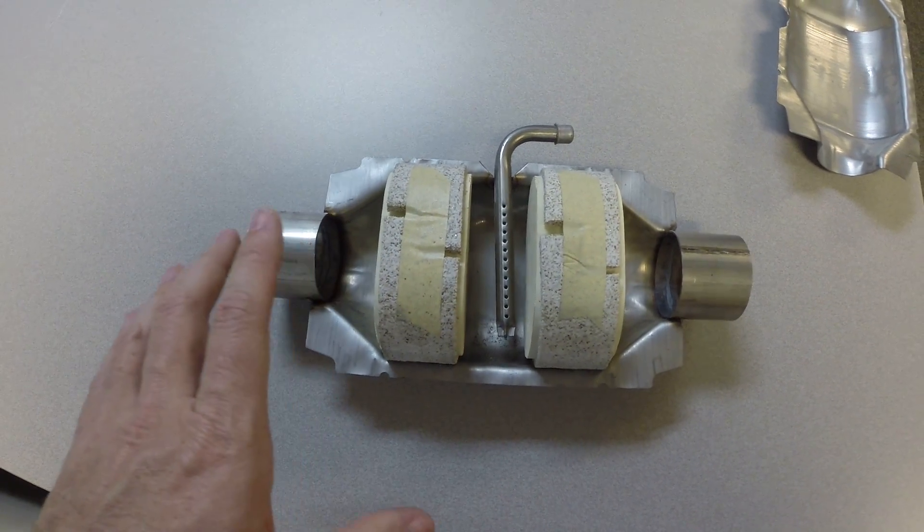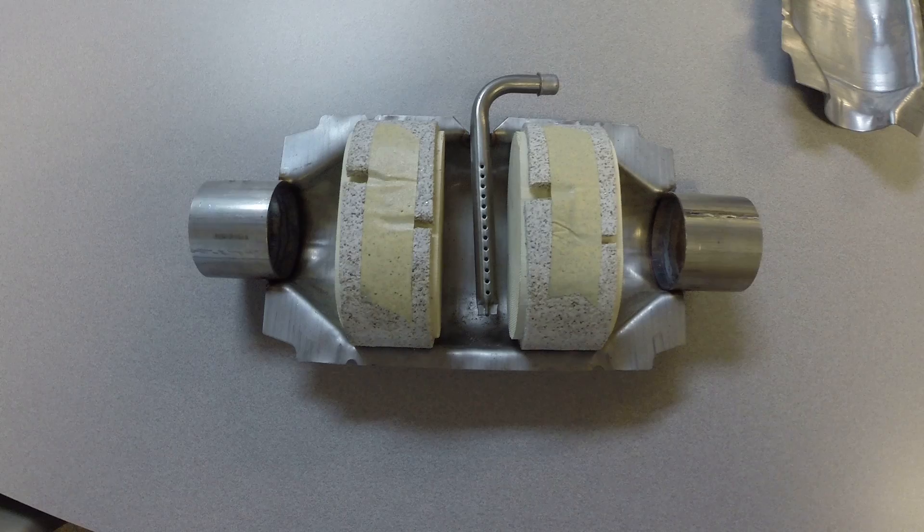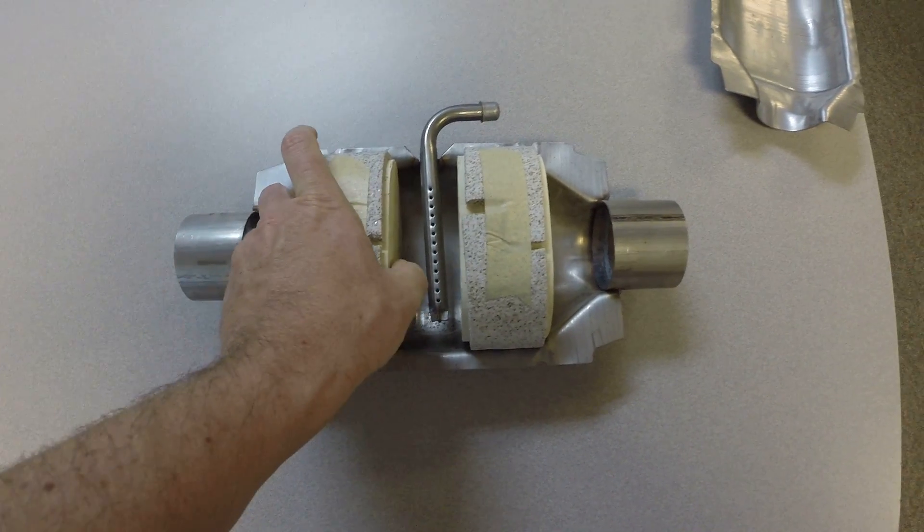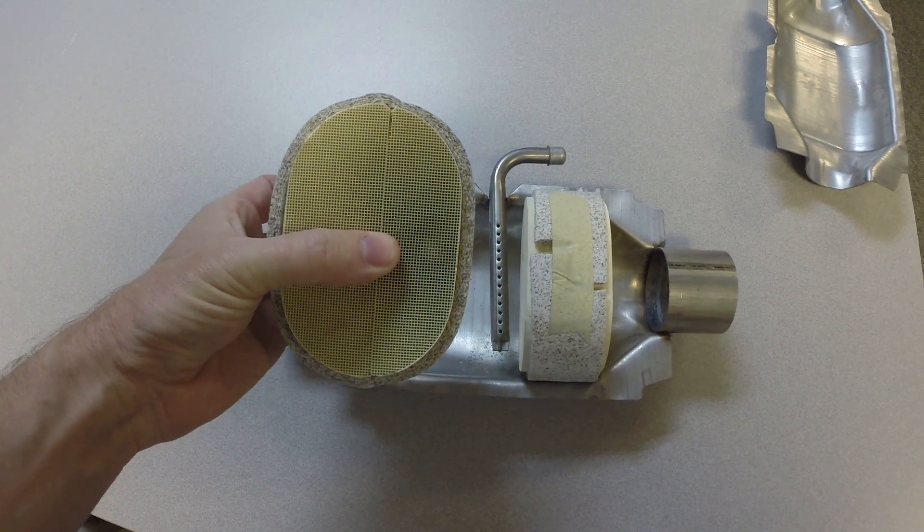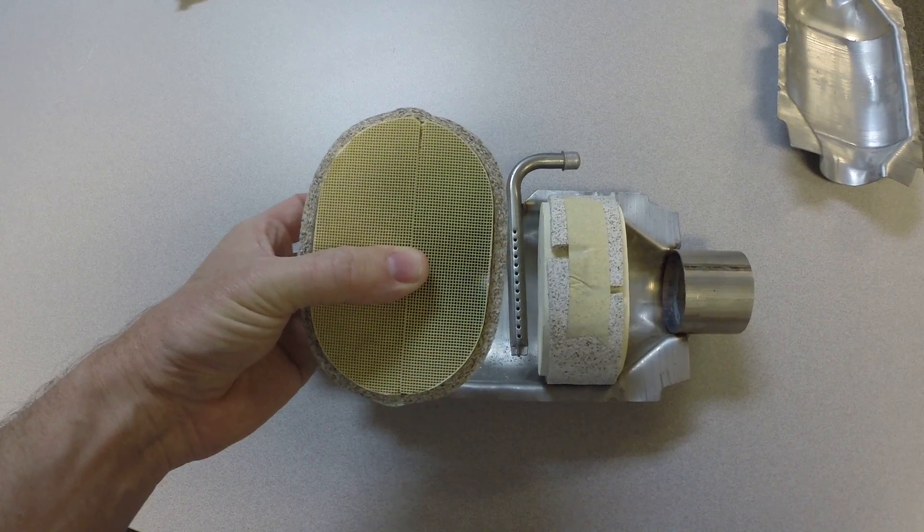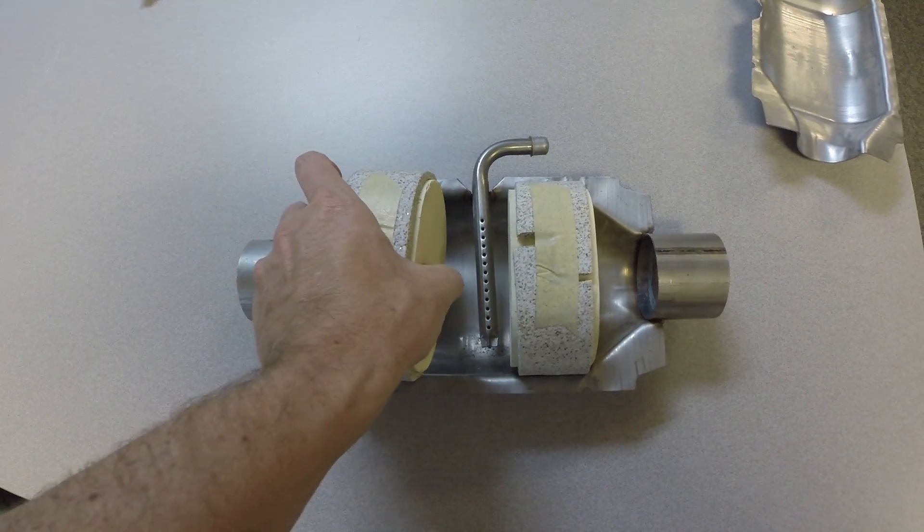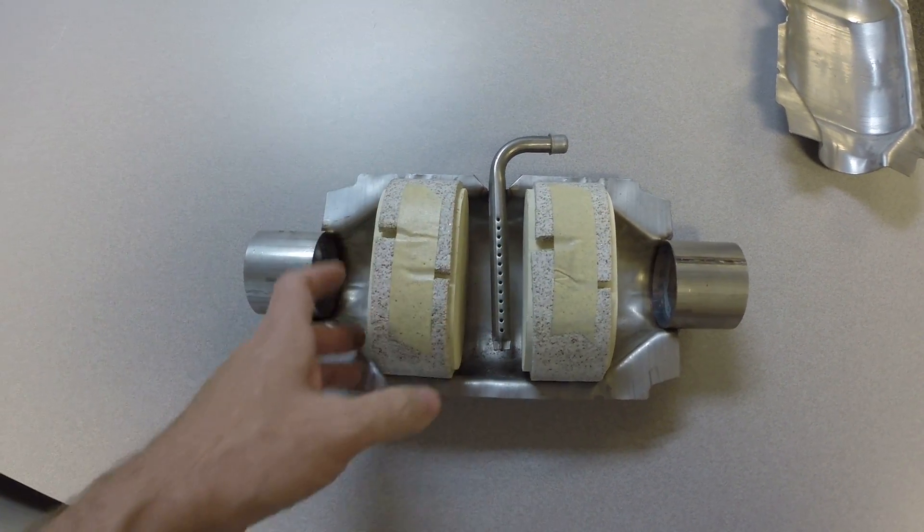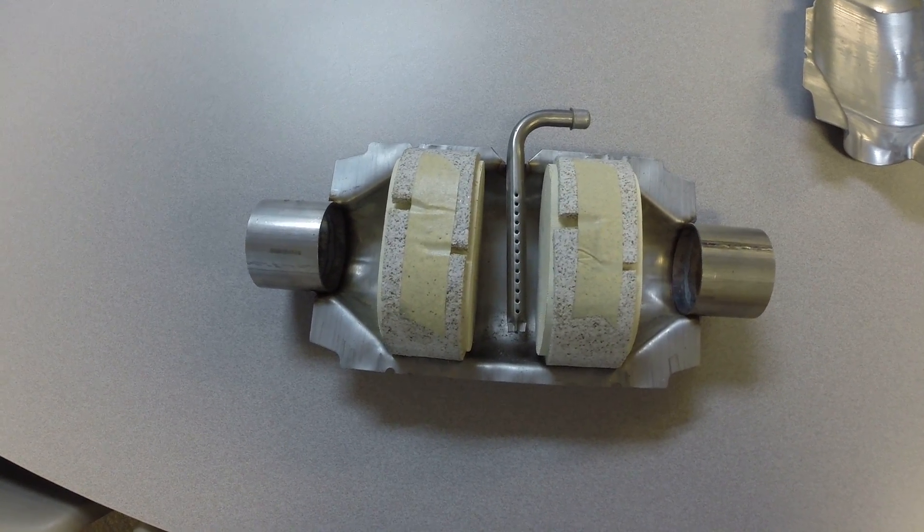So anyway, that's the basic function of the catalytic converter. A lot of people seem to think that the catalytic converter is there to rob the vehicle of horsepower. It doesn't. These pores here are very open, very easy to pass air through this. Now, sometimes they do melt down. And when they melt down, they do plug up the exhaust. But then you're talking about a failure of the engine management system at that point.